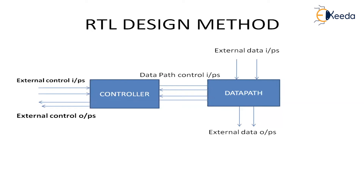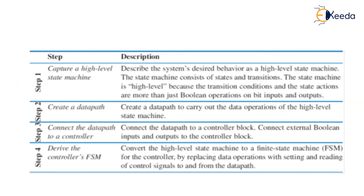Inside your data path you will have certain adders or whatever operation is being carried out. When capturing the behavior from the high level state machine, you will know what data path components to include. The data path has data inputs and data outputs, and it connects with the controller using data path control inputs as well as outputs. There will also be certain external control inputs and external control outputs. Both the controller and the data path will have inputs and outputs and they connect with each other using control signals.